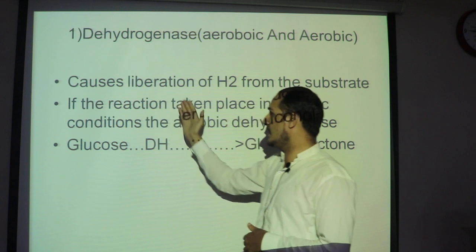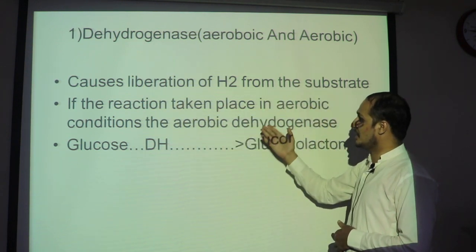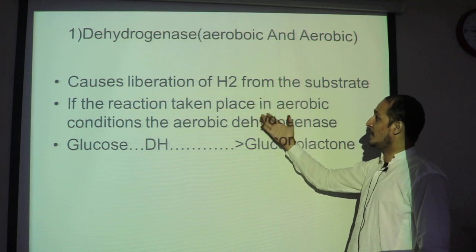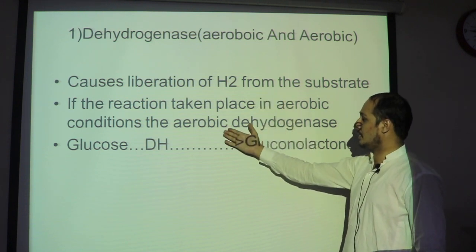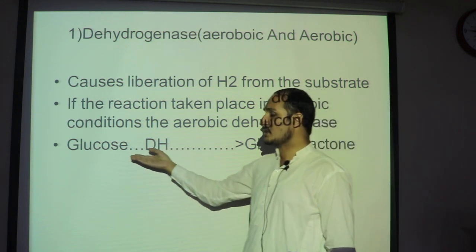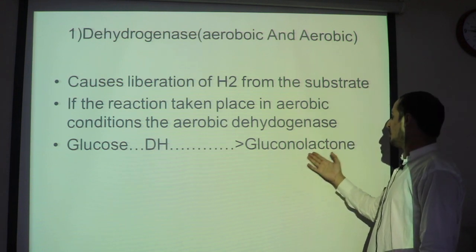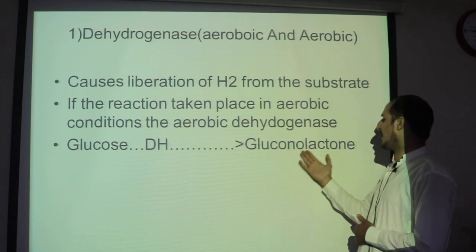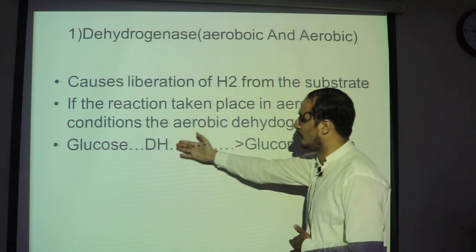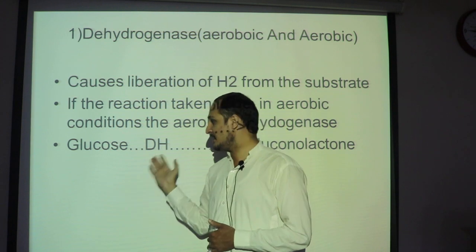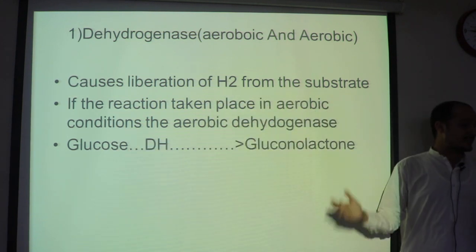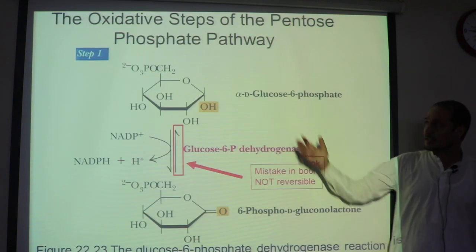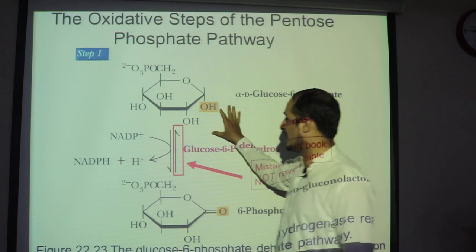If the reaction takes place in the presence of oxygen, this is known as an aerobic condition. An example of an oxidoreductase is dehydrogenase — for example, glucose is converted to 6-phosphogluconolactone by the action of glucose-6-phosphate dehydrogenase enzyme, as we studied in the hexose monophosphate shunt pathway.